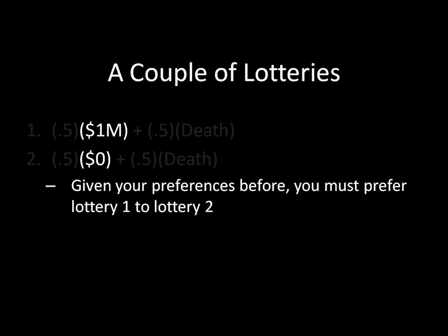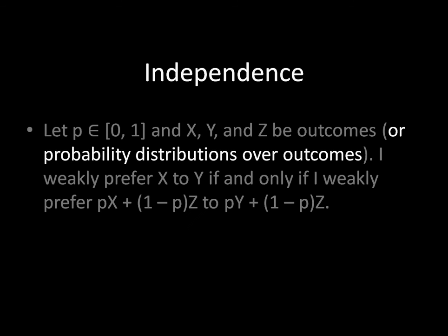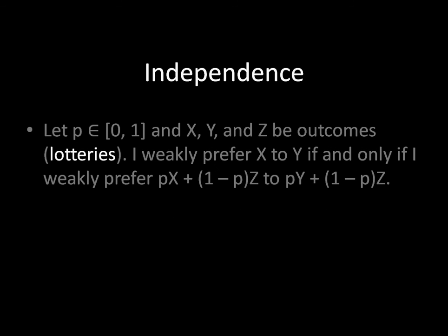This is a straightforward version of independence. But notice there's a tricky part of the definition: x, y, and z do not have to be outcomes that occur with certainty. They could be themselves lotteries, because probability distributions over outcomes are lotteries.